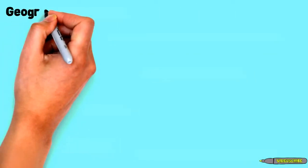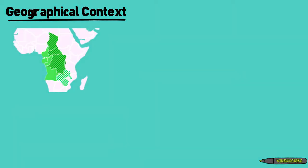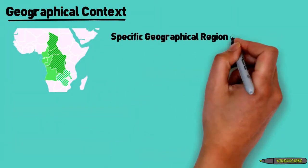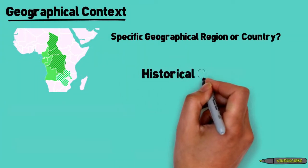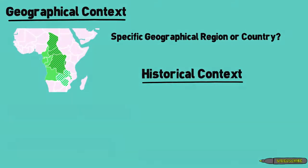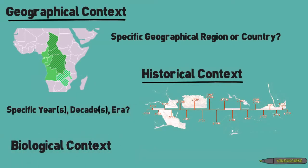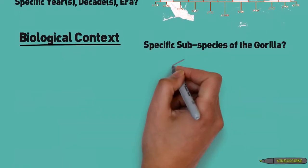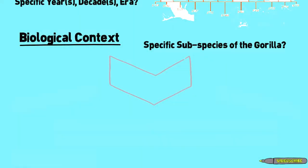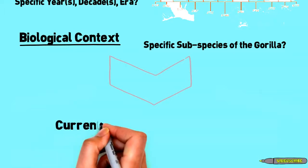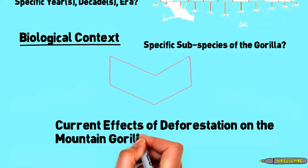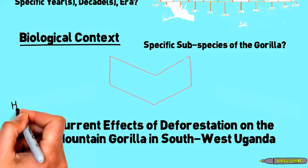For example, you could add some geographical context to your paper. Is there a geographic region or a country in which gorillas are specifically affected by deforestation? Perhaps you want to focus more on a historical context — is there a certain time aspect you want to write about, perhaps the time when deforestation really started to affect gorillas? And third, with this topic you could also add biological context. Perhaps there's a specific subspecies of gorilla that you're interested in writing about. So when we combine all three contexts and incorporate them into the original topic, this is what we get: something like 'current effects of deforestation on the mountain gorilla in southwest Uganda.'